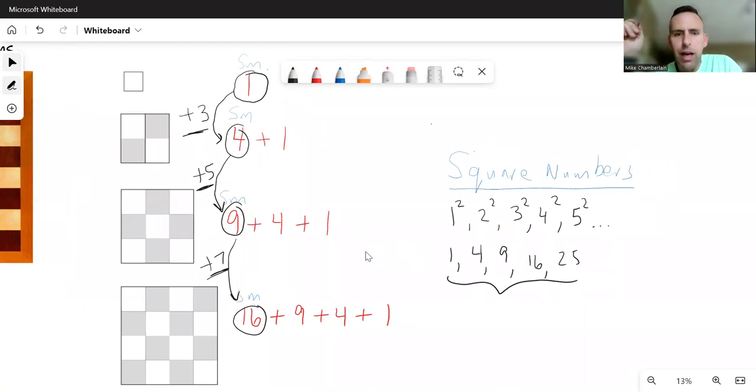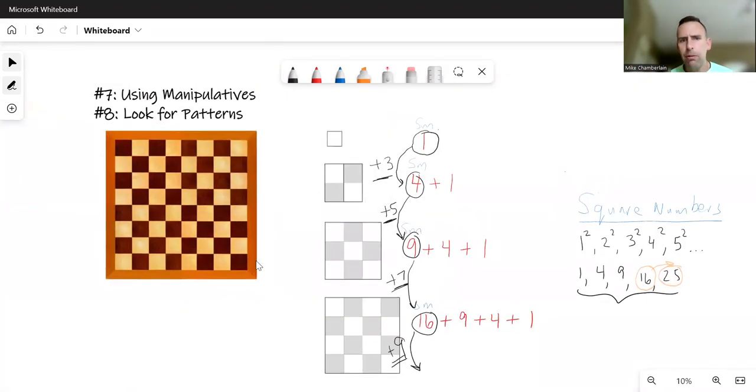Well, 3, 5, 7, that looks like I'm counting by odds. So probably on the next one would be the next odd number, plus 9. And in fact, it is true. If you think about 16 and you add 9 more, it will take you to 25. So you can oftentimes find a lot of patterns that exist within a problem.